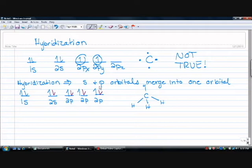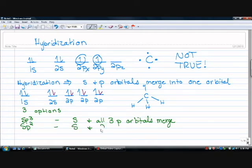In hybridization, there are three options, three different types of hybridization. We have SP3, which S and all three P orbitals merge. We have SP2, where S and two P orbitals merge. And we have SP, where S and only one P orbital merges.